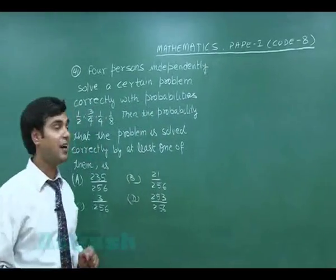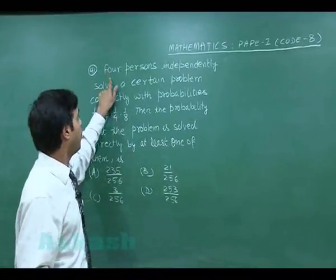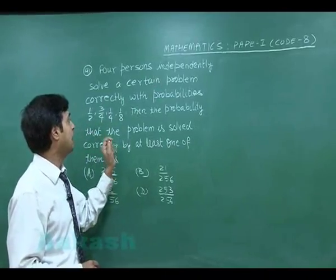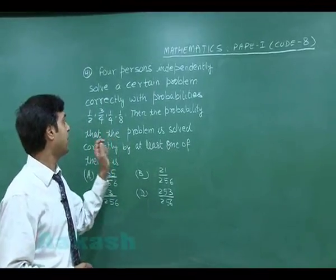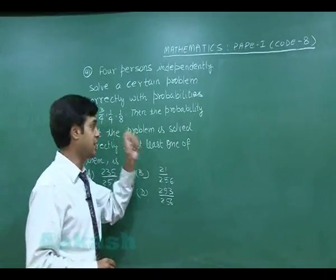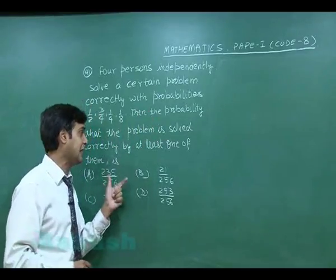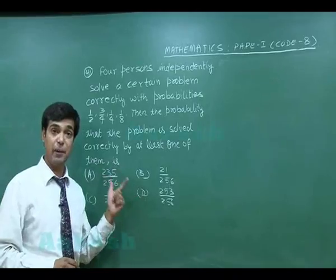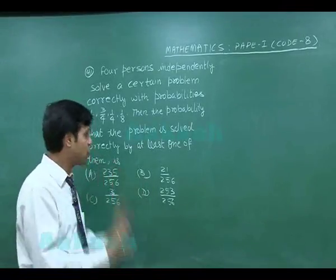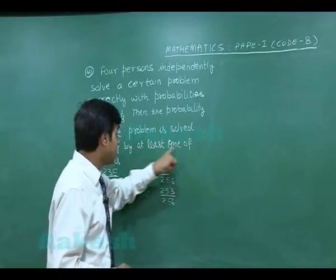The questions start from question number 41. Question 41: Four persons independently solve a certain problem correctly with probabilities 1/2, 3/4, 1/4, and 1/8. Then the probability that the problem is solved correctly by at least one of them is to be found. Four options are given.